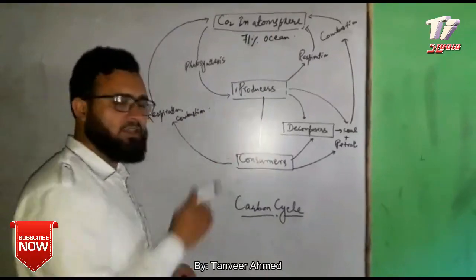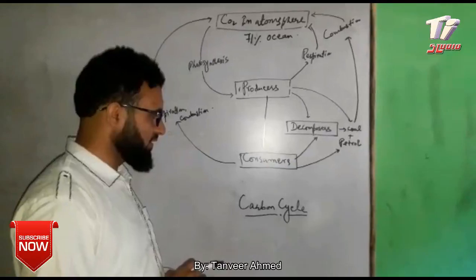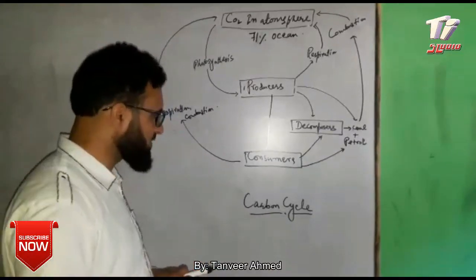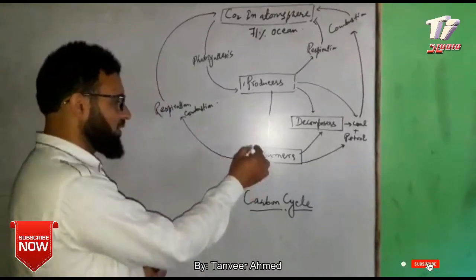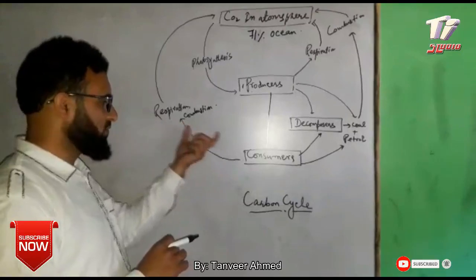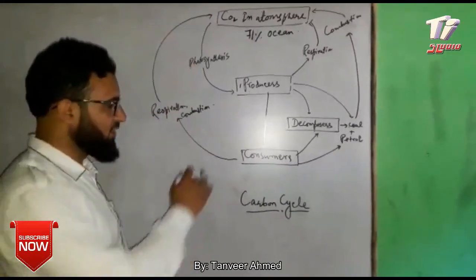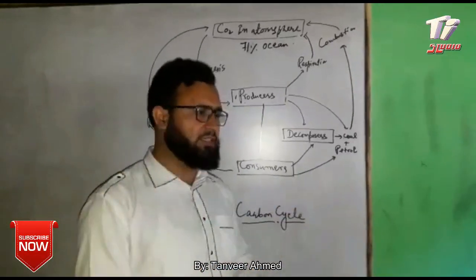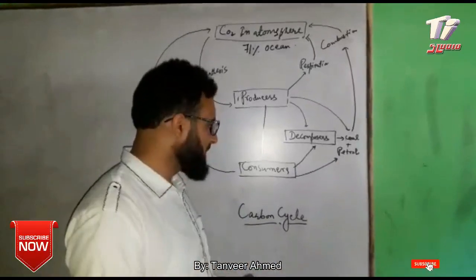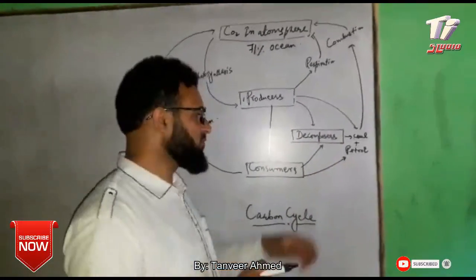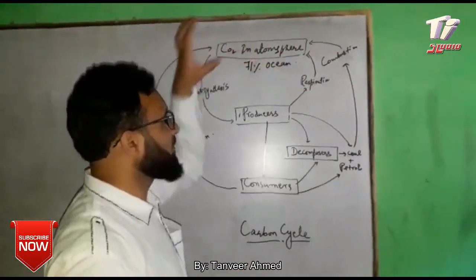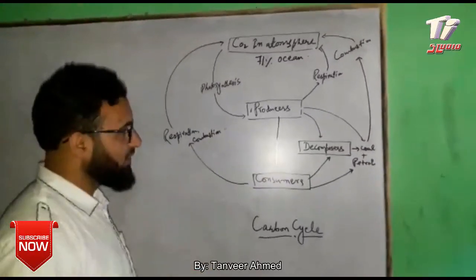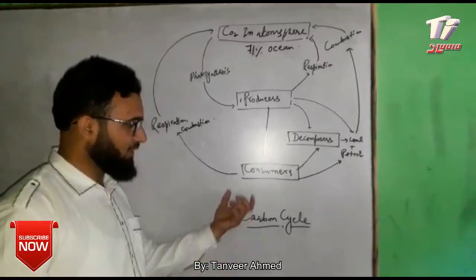Consumers — animals like cows and goats — are consumers. Through respiration, consumers release carbon dioxide back into the cycle. Decomposers also decompose matter. This is another way — this is how the carbon dioxide moves within the cycle.